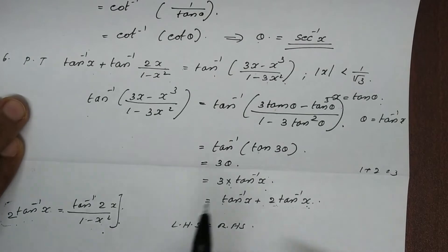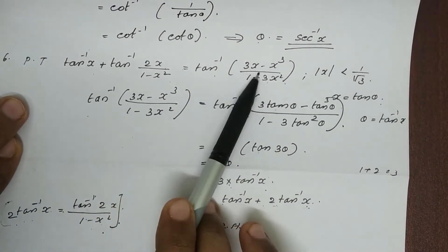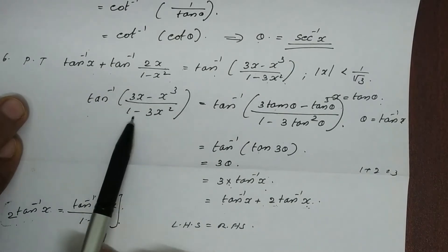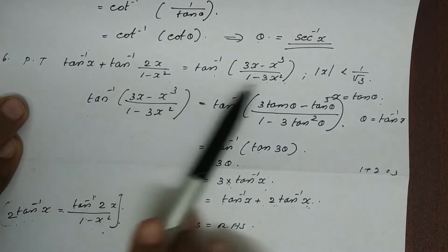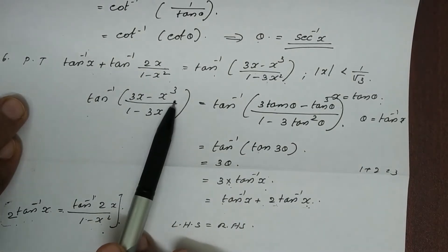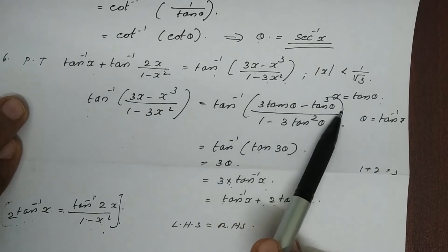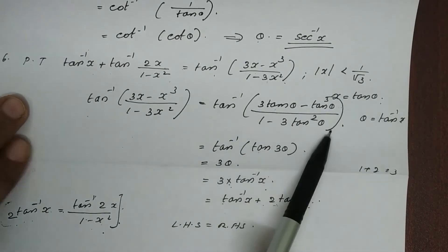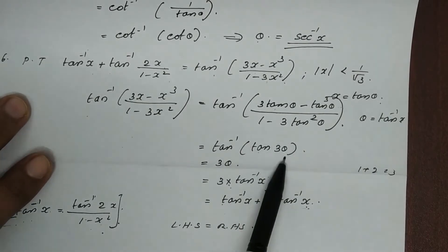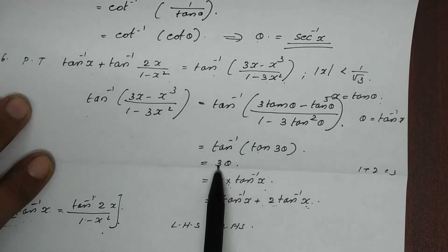Let me prove it. We will have the result tan inverse 3x minus x cubed divided by 1 minus 3x squared. Let x equal tan theta, then we get tan inverse of 3 tan theta minus tan cubed theta divided by 1 minus 3 tan squared theta, which equals tan inverse of tan 3 theta, giving 3 theta.